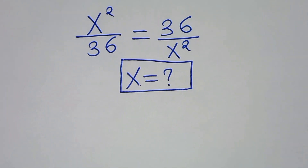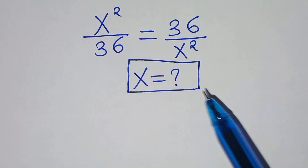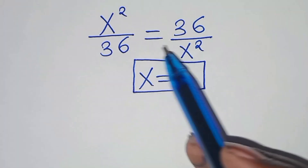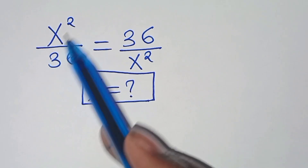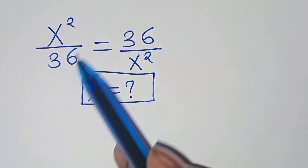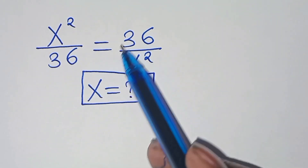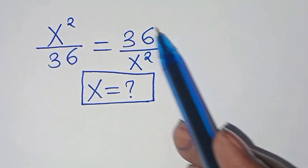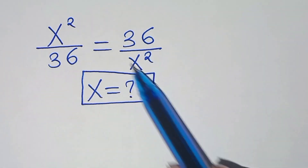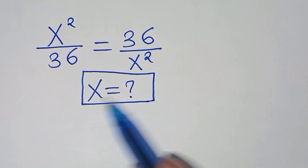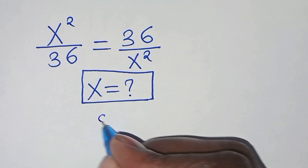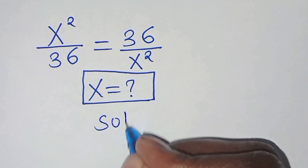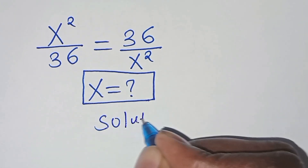Hello everyone, you are welcome to solve this nice algebra problem: x squared over 36 is equal to 36 over x squared. What is the value of x? Let's present the solution from here.